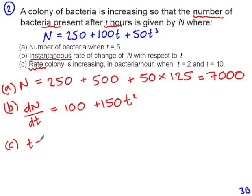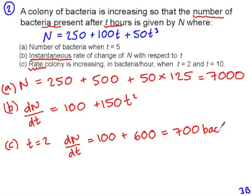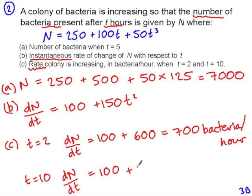So when T is 2, dN by dt is 100 plus 600, 700 bacteria per hour. And when T is 10, dN by dt is 100 plus 15,000. So altogether 15,100 bacteria per hour.